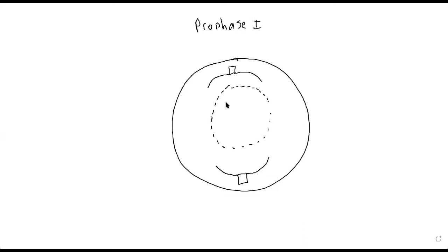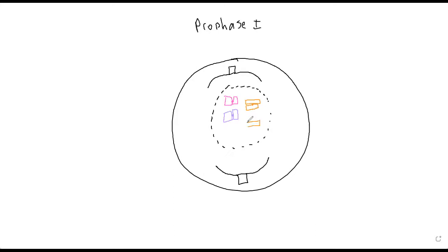I'm going to draw chromosome 1 and chromosome 2. Chromosome 1 is going to be represented by squares, and chromosome 2 is going to be represented by columns. Remember there are two copies of chromosome 1 and two copies of chromosome 2 — one from each parent.